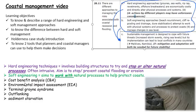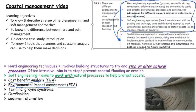The two tools we're going to look at: one is called a cost-benefit analysis, or CBA — cost-benefit analysis. The other one is an environmental impact assessment. Other key terms: terminal groin syndrome, outflanking, and sediment starvation.